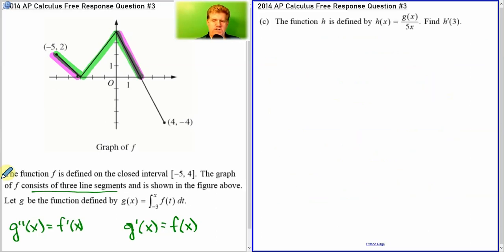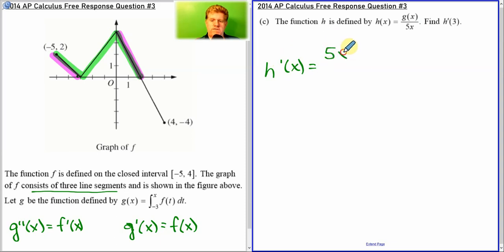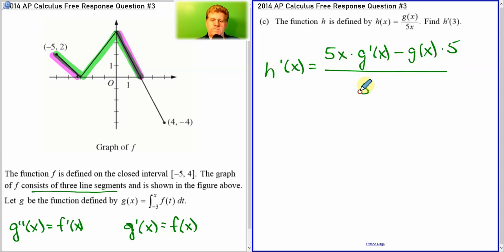Next question. We have a new function: h is defined by this function, and we're looking for h prime of 3. Well, let's take the derivative. It's a quotient rule — it's the bottom times the derivative of the top, minus the top times the derivative of the bottom, all over the bottom squared. Now in this case, we're specifically plugging in the number 3.